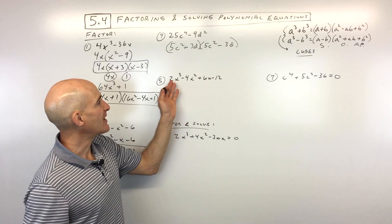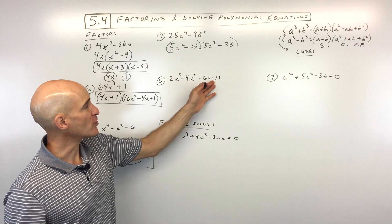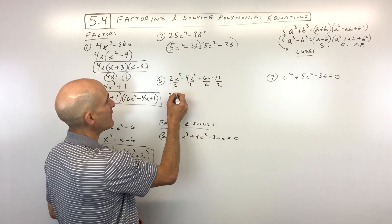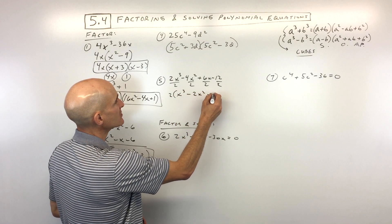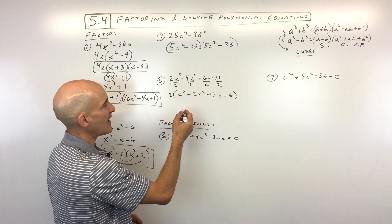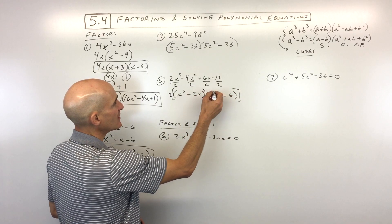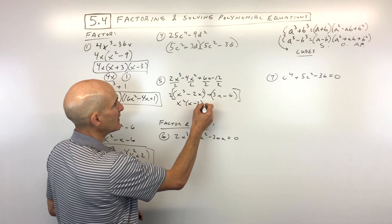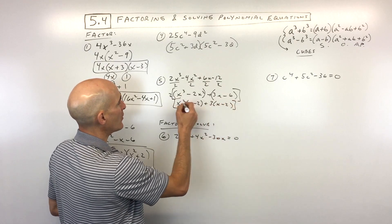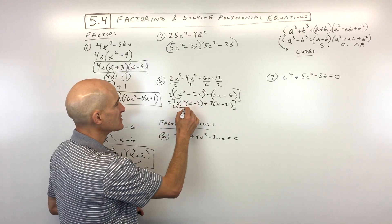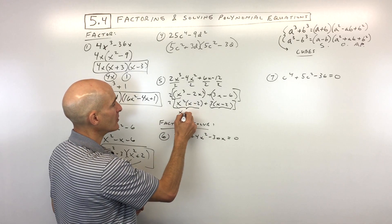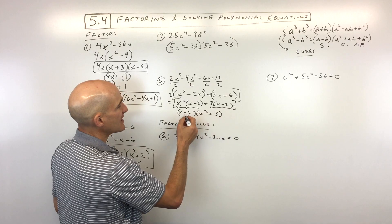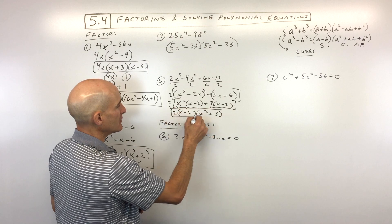Practice problem 5: with four terms, we think about grouping — but first notice we can divide all terms by 2, factoring out a 2. That leaves 2 times x cubed minus 2x squared plus 3x minus 6. Now group the first two and last two terms. Factor x squared from the first group: x squared times x minus 2. Factor 3 from the second group: 3 times x minus 2. Both groups share x minus 2, so factor it out: 2 times x minus 2 times x squared plus 3.